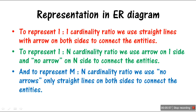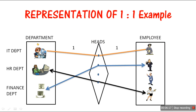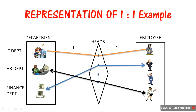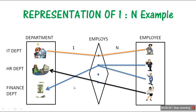Now let's look at the representations for each type of cardinality ratio in an ER diagram. To represent one-to-one, we use straight lines with arrows on both sides to connect the entities. Alternatively, you can connect both entities with straight lines and write the ratio '1:1' on top. Let's look at an example with the department entity.